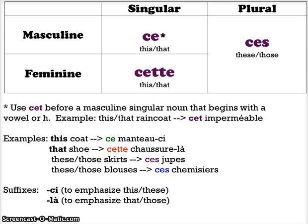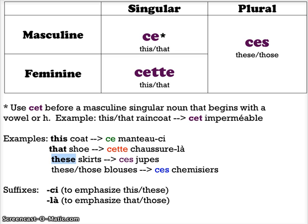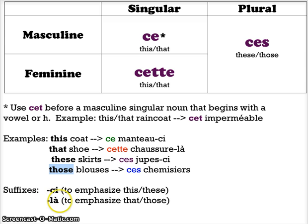You can use these suffixes in the plural as well. If I want to emphasize these skirts as opposed to those skirts, I use -ci: ces jupes-ci, these skirts. And if I want to emphasize those blouses, I use -là: ces chemisiers-là, those blouses. So by using the suffixes -ci and -là, you can emphasize this from that, these from those.